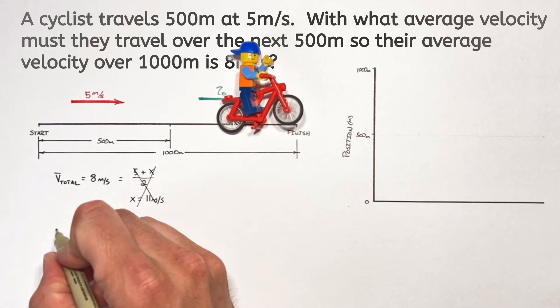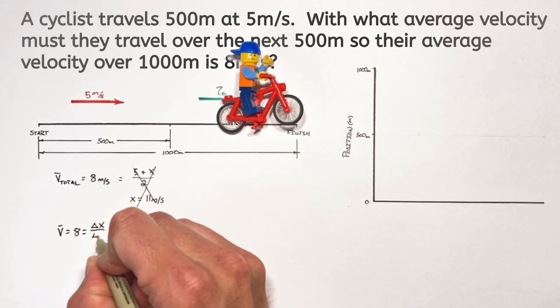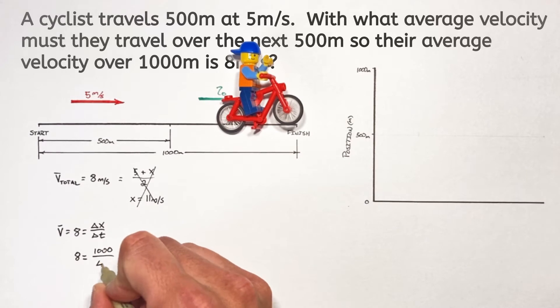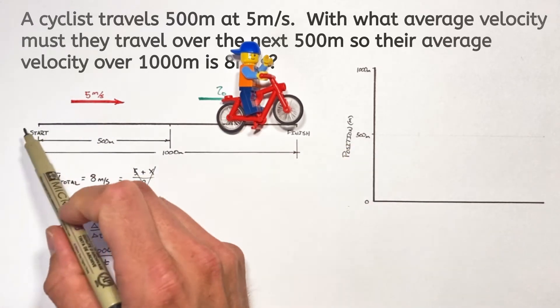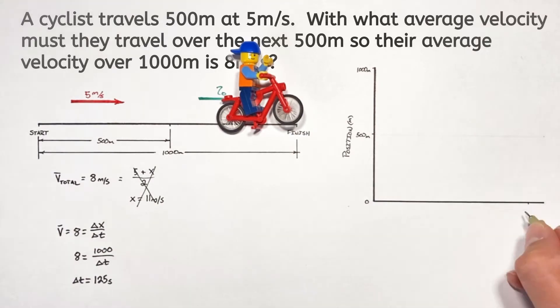So using our equation for average velocity, which is change in position over change in time, we know we want the bicycle to go 1000 meters in some certain amount of time. So our little guy on his bike has 125 seconds to travel this full 1000 meter course.